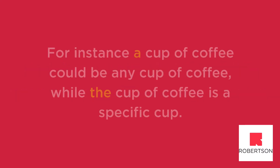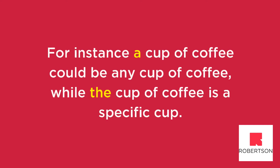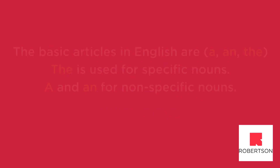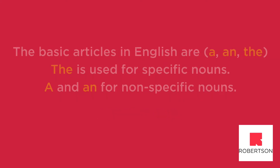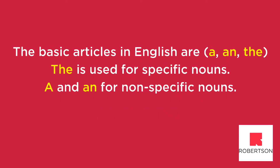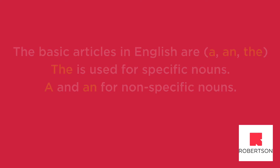For instance, a cup of coffee could be any cup of coffee, while the cup of coffee is a specific cup. The basic articles in English are 'a' and 'the'. 'The' is used for specific nouns, and 'a' or 'an' for non-specific nouns.